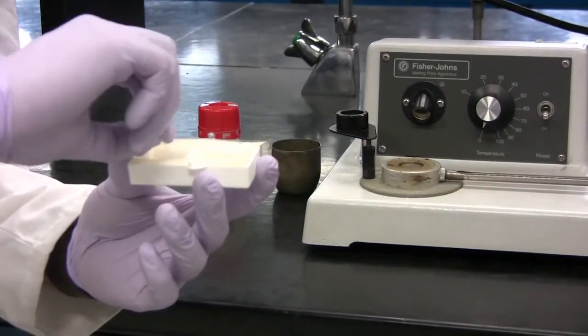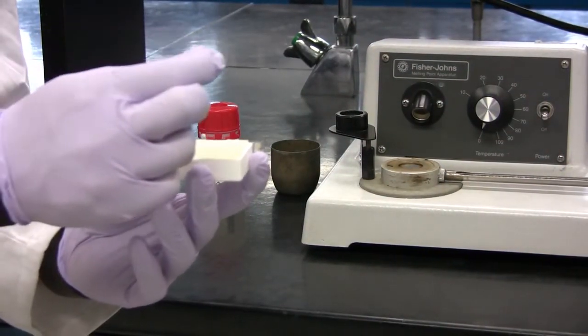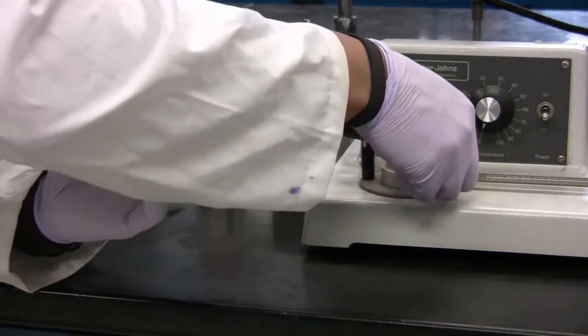Start by placing a cover slip onto the heating element. Make sure the temperature is off.